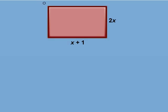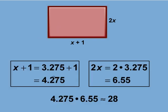Going back to the rectangle, we see that the only solution that works is 3.275. This makes the dimensions of the rectangle roughly 4.275 by 6.55. Multiplying these values gives us an area of about 28.